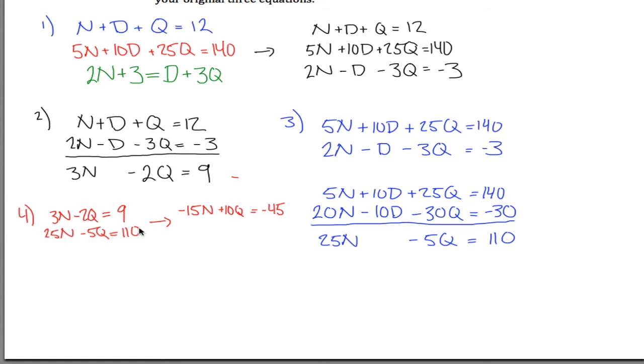And the reason I did that is I can now multiply the bottom by 2, giving me 50N minus 10Q and 220, and by carefully choosing to multiply those equations by those numbers, I now have something that if I add up, the Q's will cancel out.